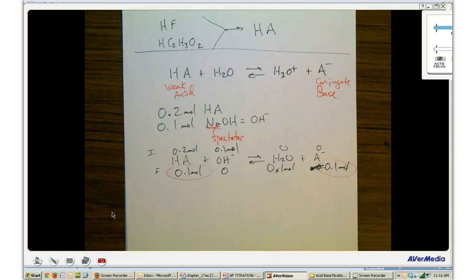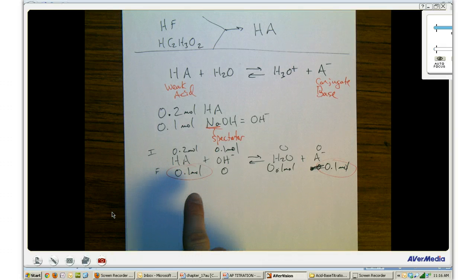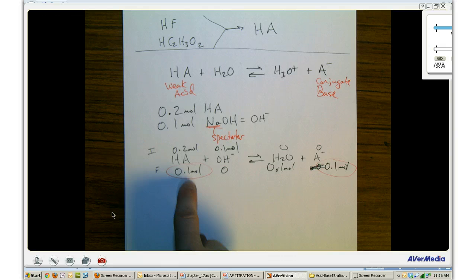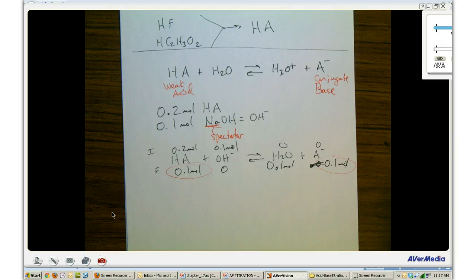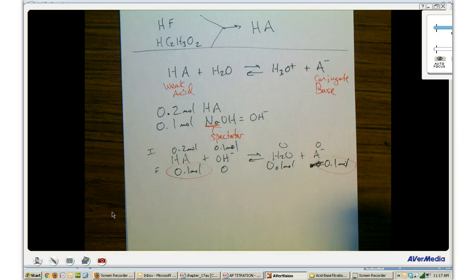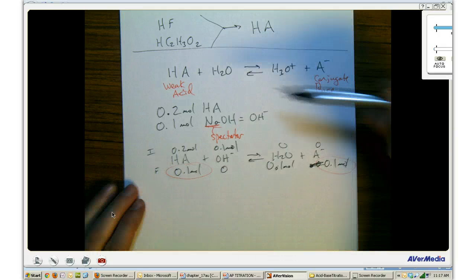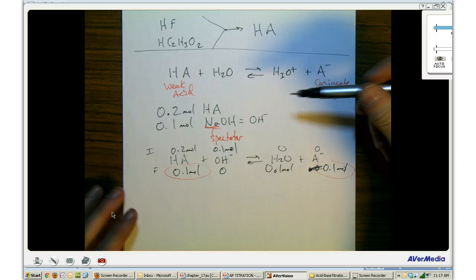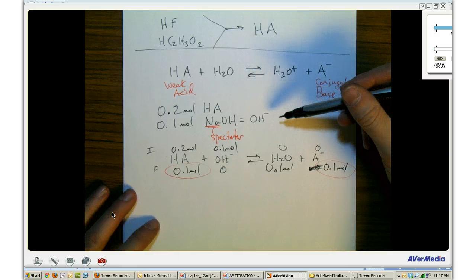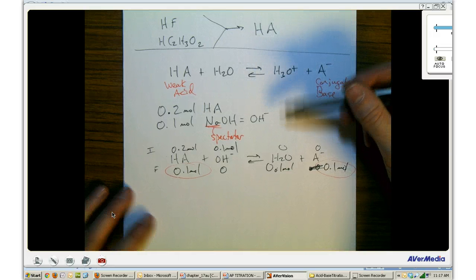So I've taken 0.2 moles of my weak acid, reacted it with a strong base, and produced equal amounts of a weak acid and its conjugate base — that's the definition of a buffer. If I add a strong base, it reacts with the HA; if I add a strong acid, it reacts with the A-, allowing the system to maintain pH. This is an example of a weak acid reacting with a strong base.